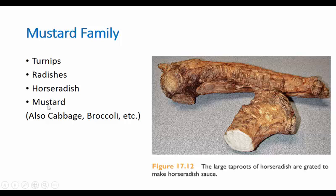What else comes with mustard? Cabbage, broccoli, Brussels sprouts, cauliflower — all of those came from the mustard plant. So in addition to the herb mustard, you have all of these vegetables that you don't use as herbs but as dishes.